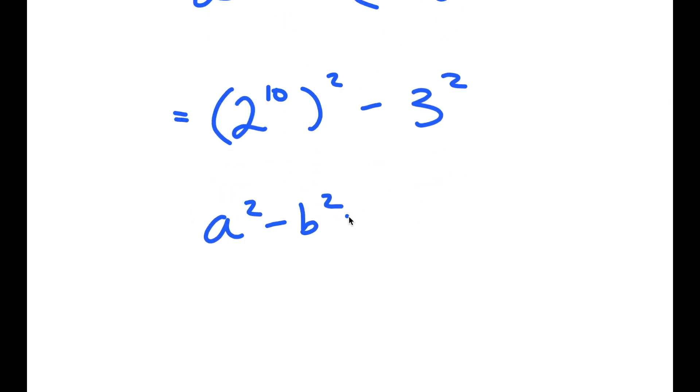Now, if I have something in the form a squared minus b squared, this is equal to a plus b times a minus b.